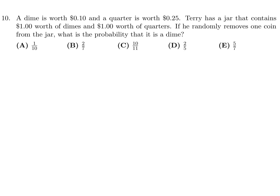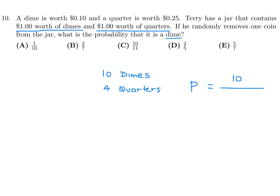Question 10: A dime is worth 10 cents and a quarter is worth 25 cents. Terry has a jar with a dollar worth of dimes and a dollar worth of quarters. One dollar worth of dimes is 10 dimes; one dollar worth of quarters is 4 quarters. The probability of removing a dime is 10 out of 14 total coins (10 + 4). In lowest terms, that's 5 over 7. The answer is E.